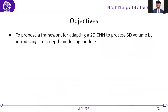The objective is to propose a framework for adapting a 2D CNN to process 3D volumes by introducing a cross-depth modeling module. The proposed method should have computational complexity of the order of a 2D CNN, but should be able to incorporate inter-slice correlation as well.